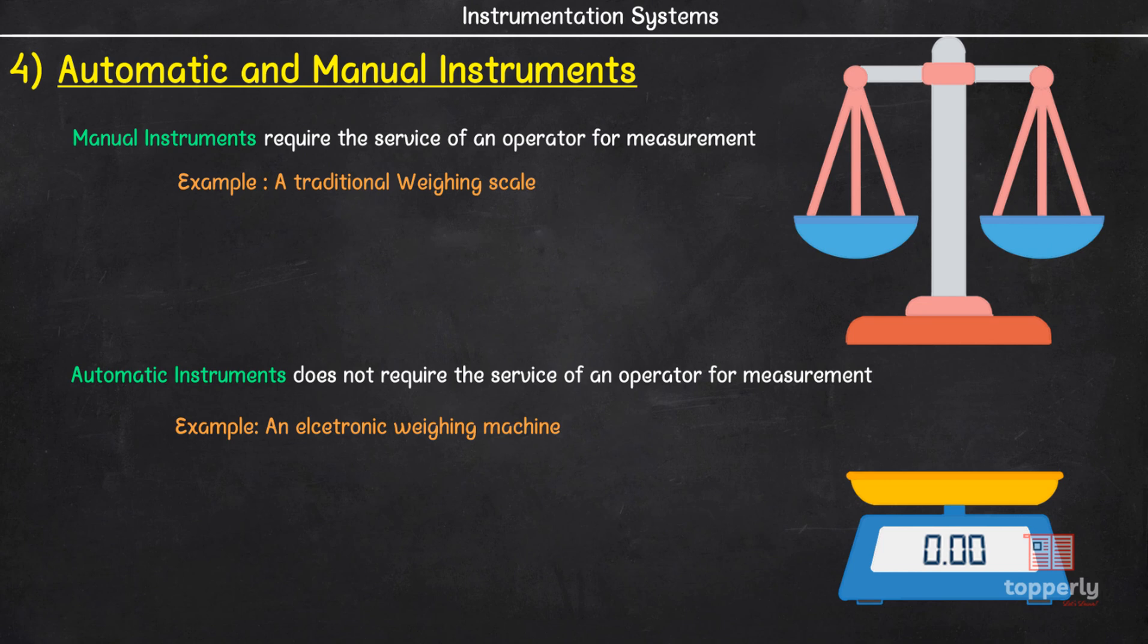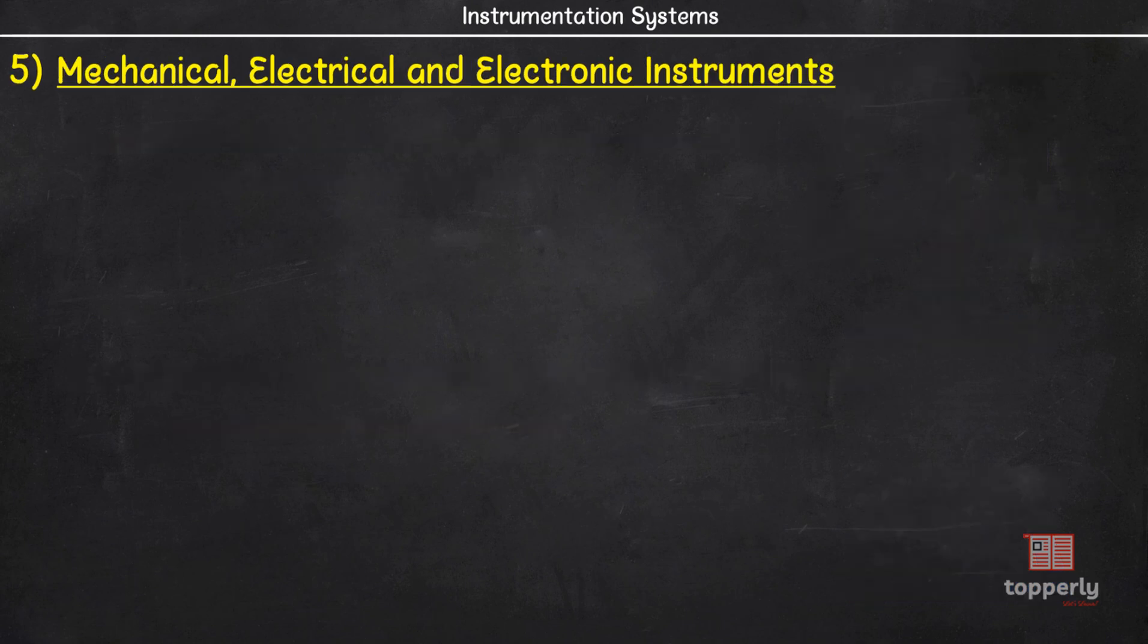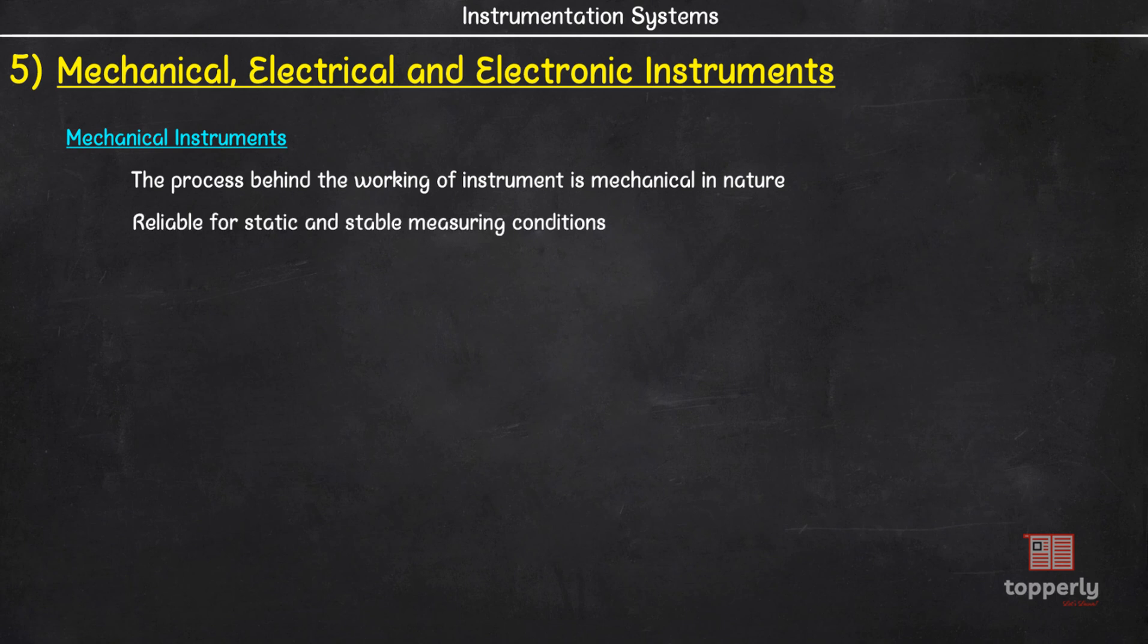Going to the next classification. Based on the process, we can classify instruments into mechanical, electrical and electronic instruments. If the process behind the working of an instrument is mechanical in nature, we call that device a mechanical instrument. These instruments are reliable for static and stable conditions. Also, they are cheaper in cost and durable.